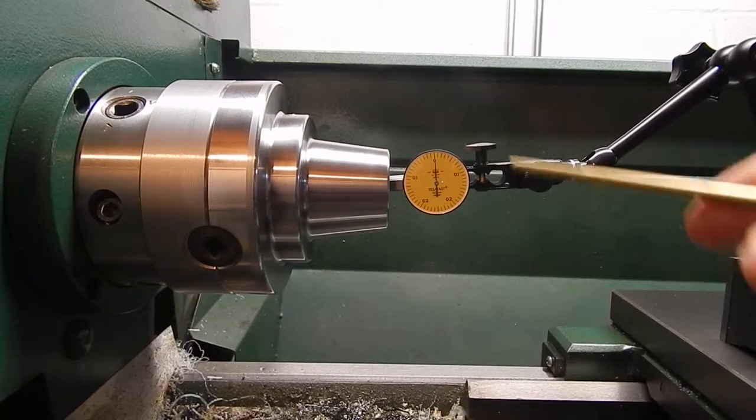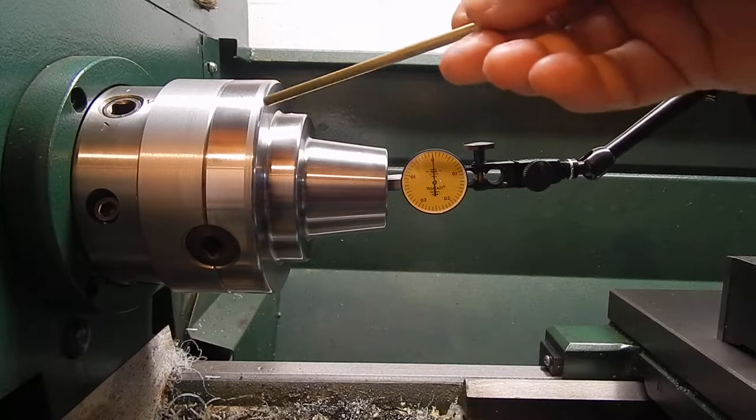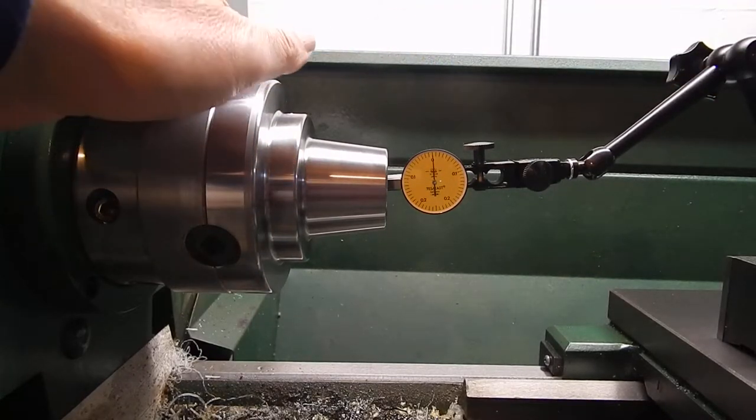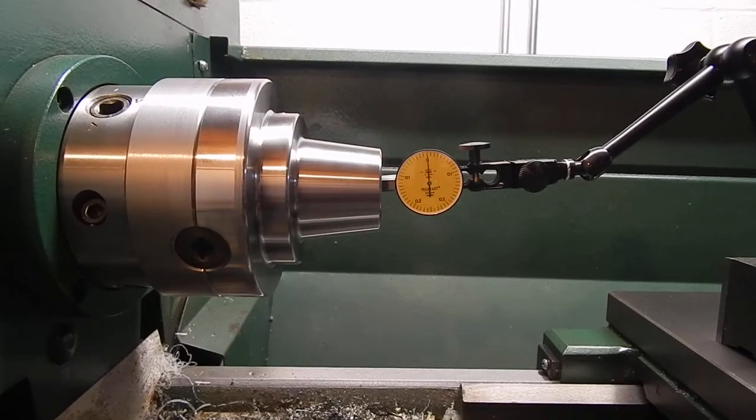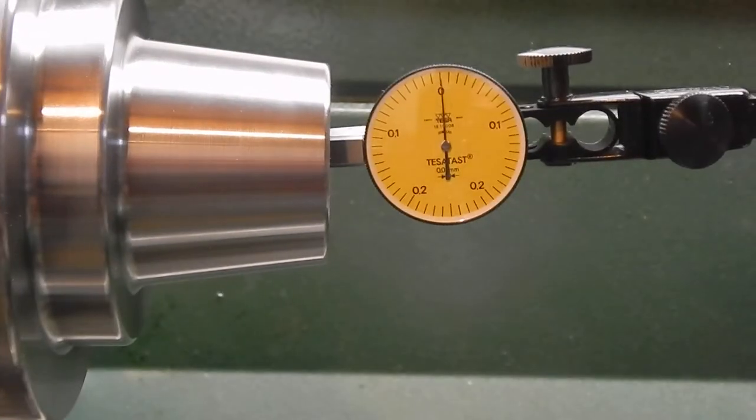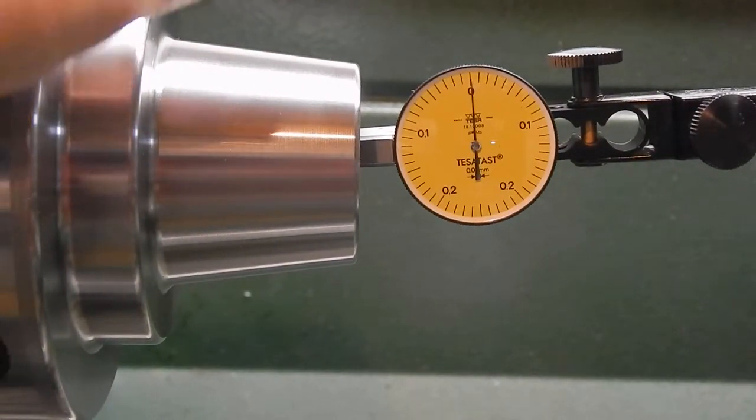I already set it up on the forward journal, which is located somewhere in this area. Let's see what we got. Let me zoom in here. Okay, now you can see. Rotate the spindle.